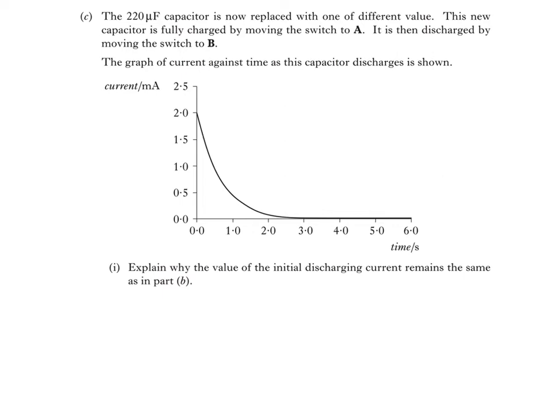Explain why the value of the initial discharging current remains the same as in part B. First I'll overlay the graph from part B for the 220 microfarad capacitor. You can see the initial discharging current is exactly the same with this new capacitor. The initial maximum current can be calculated using Ohm's law by dividing the supply voltage by the resistance. Since both quantities are constant, the initial discharging current will also be unchanged.